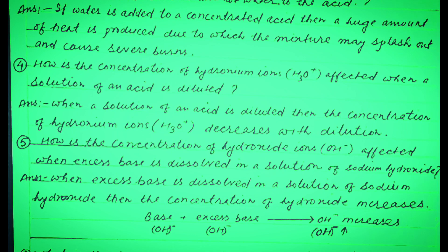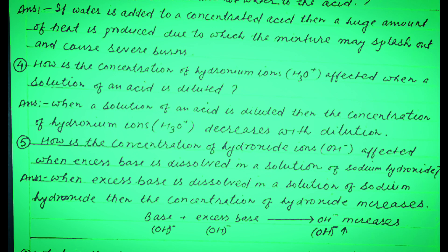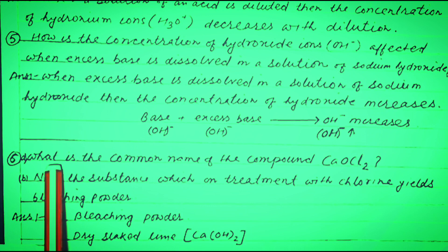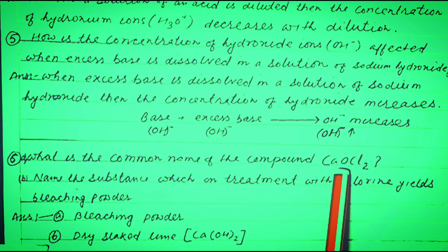Sodium hydroxide के solution में अगर excess base डाल दिया जाता है तब उस base के अंदर hydroxide ions का concentration बढ़ जाता है। जैसे जैसे base के अंदर और भी base डालेंगे तो result क्या होगा? OH⁻ बढ़ जाएगा। (If excess base is added to sodium hydroxide solution, the hydroxide ion concentration increases; as more base is added, OH⁻ increases.)